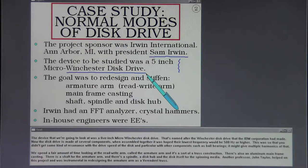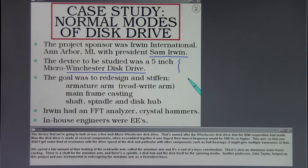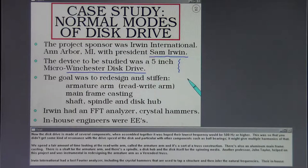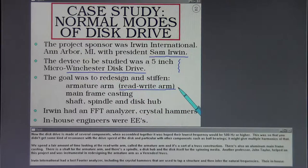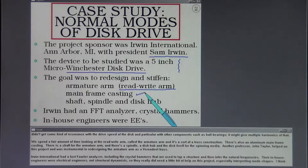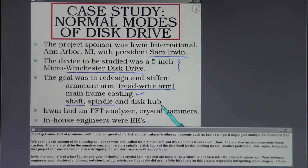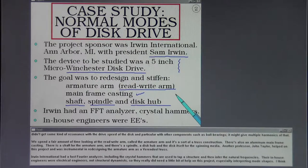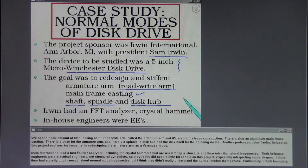The disk drive is made of several components. When assembled together, it was hoped their lowest frequency would be 500 hertz or higher, so that you didn't get some kind of resonance with the drive speed of the disk, and particularly with other components such as ball bearings that might give multiple harmonics. We spent a fair amount of time looking at the read-write arm, called the armature arm. There's also an aluminum mainframe casting, a shaft for the armature arm, a spindle, disk hub, and the disk itself for the spinning media. Another professor, John Taylor, helped on this project and was instrumental in redesigning the armature arm as a Vierendeel truss.